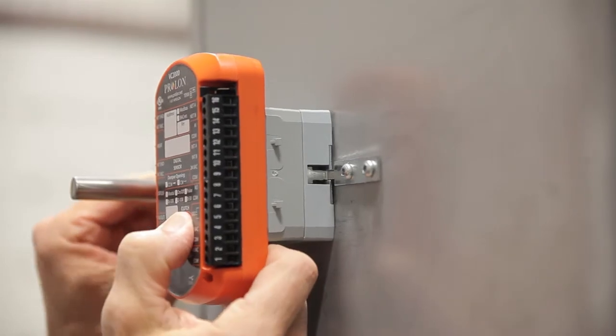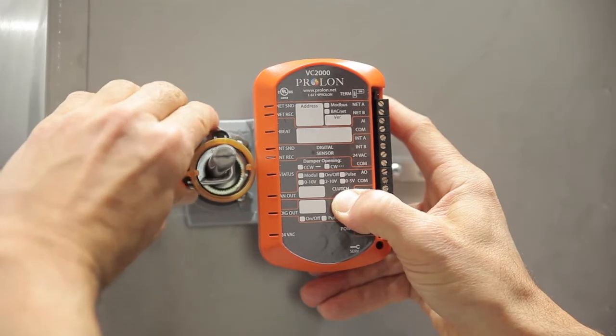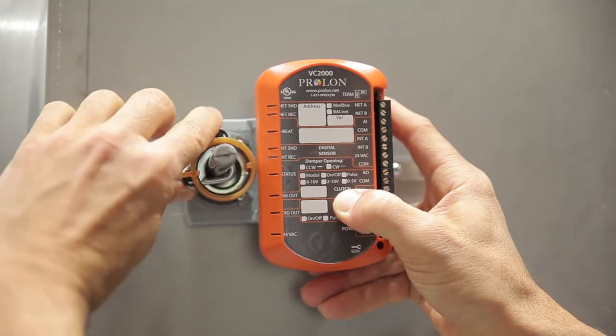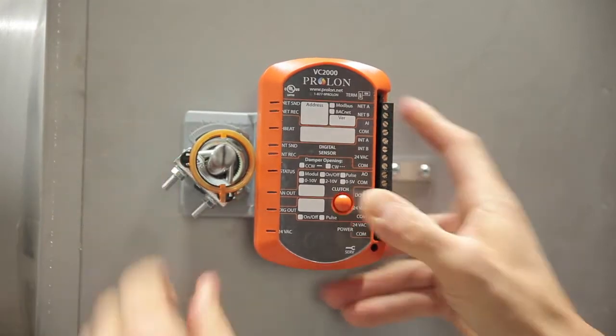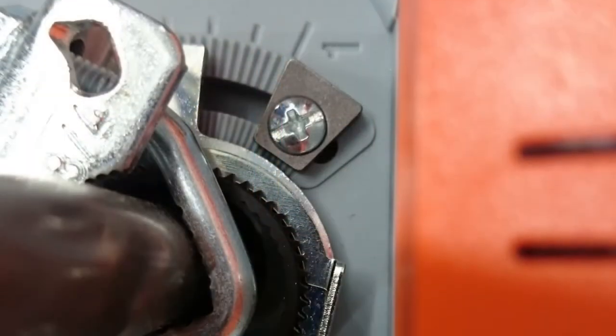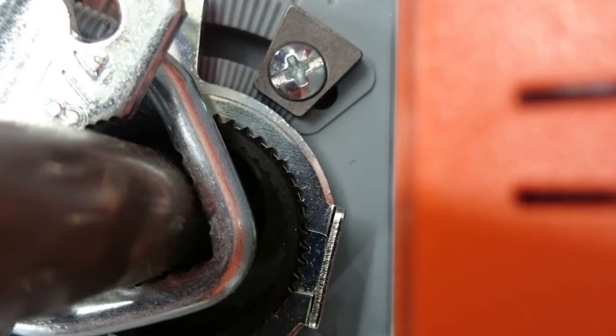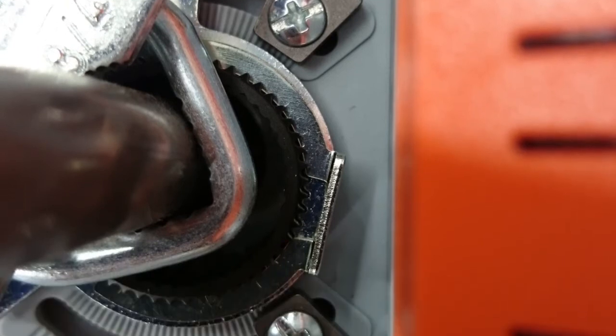While pressing the clutch button on the front of the VC2000, make sure the clamp and damper assembly move freely over the entire span of the damper rotation. If needed, use the end stoppers to limit the actuator's travel so it matches that of the damper blade.